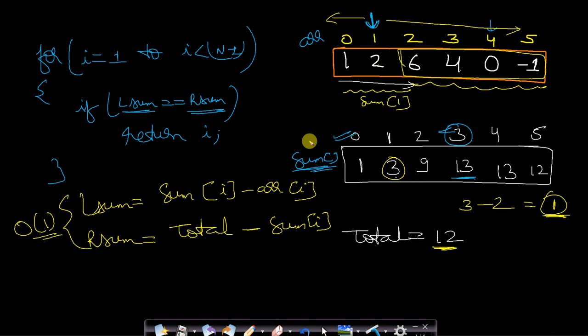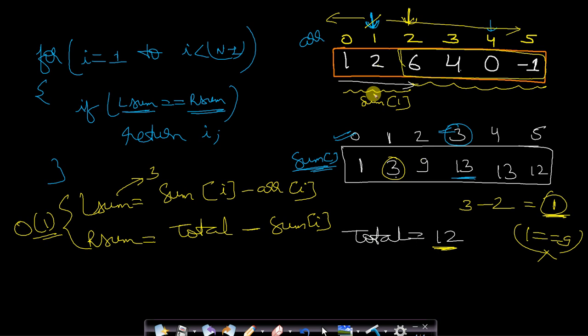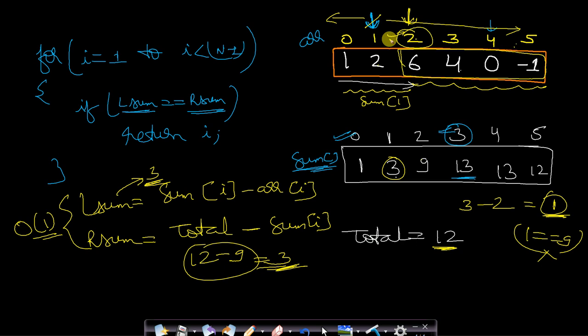Comparing at index 1: left sum = 1 and right sum = 9, so they are not equal. We increment i to index 2. Now left sum = sum[2] - arr[2] = 9 - 6 = 3, and right sum = total - sum[2] = 12 - 9 = 3. Left sum equals right sum, so we return index 2 as the equilibrium point. You can verify manually: right sum = 4 + 0 + (-1) = 3 and left sum = 1 + 2 = 3.